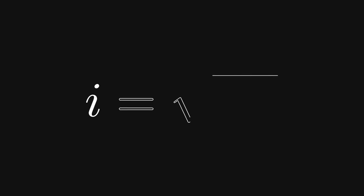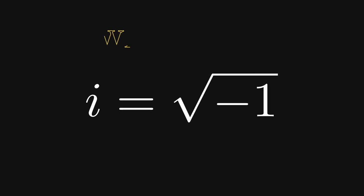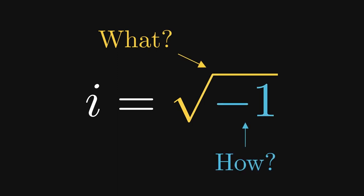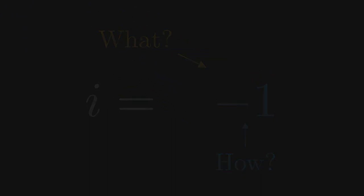What is i? Mathematicians use i to represent the square root of negative 1. But what is the square root of a number, and how do we think about the square root of a negative number? Before we talk about the square root of a negative number, let's consider the square root of a positive number, say the number 4.